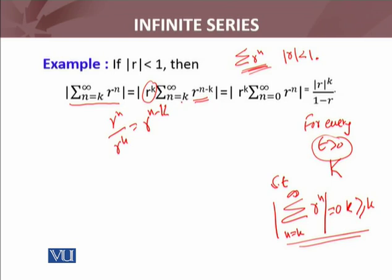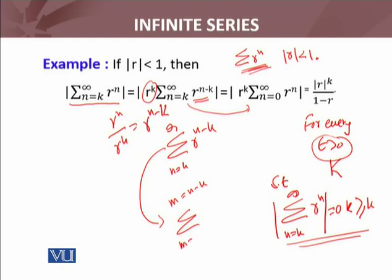Now, n minus k, I will shift the index. So r^k times summation n equals k to infinity, r raised to power n minus k. If I substitute m equals n minus k, then this series will become m equals zero to infinity, r raised to power m. This series becomes this if I put m equals n minus k. Now, whether I write m or n, it doesn't matter. So this series, by changing the index, I convert it, and ultimately I've written it in n.